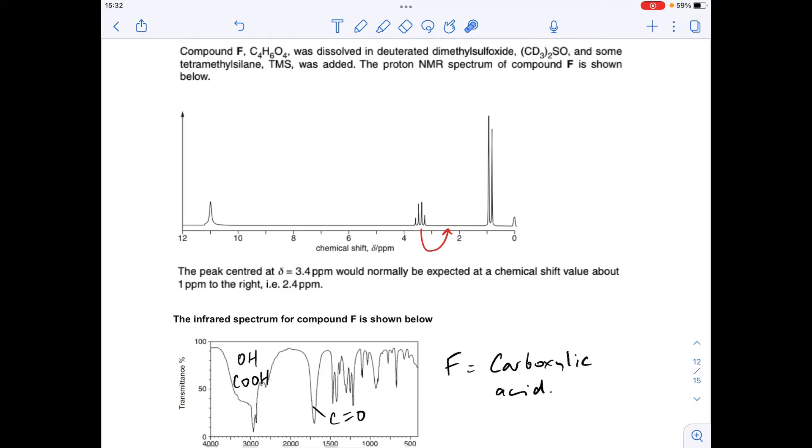Okay, so moving on to the proton NMR spectrum, we've got one, two, three signals. So there are three proton environments in the molecule. This one here is the carboxylic acid hydrogen, which confirms what we said from the infrared. We've only got two other environments now for the hydrogens.